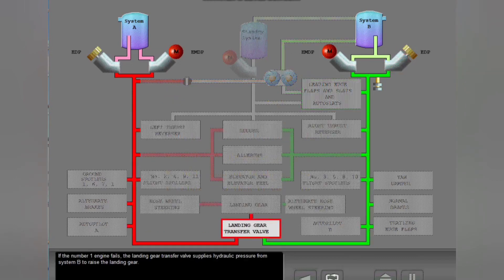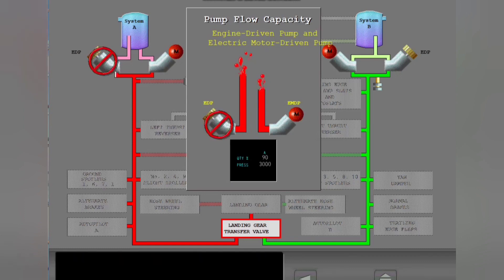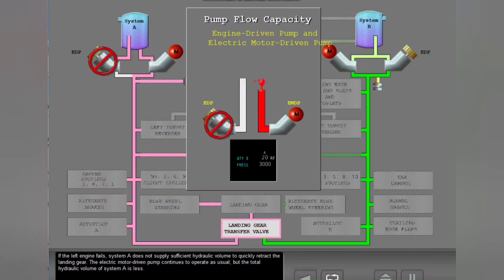If the number one engine fails, the landing gear transfer valve supplies hydraulic pressure from System B to raise the landing gear. In System A and System B, the engine driven pumps supply a larger volume of fluid than the electric motor driven pumps. If the left engine fails, System A does not supply sufficient hydraulic volume to quickly retract the landing gear. The electric motor driven pump continues to operate as usual, but the total hydraulic volume of System A is less.